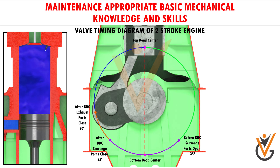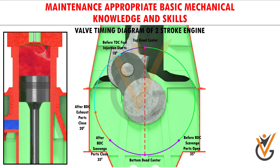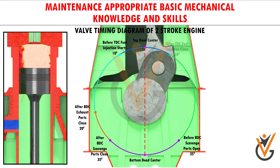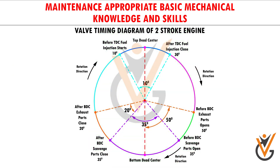Compression of air starts after the exhaust valve closes. Fuel injection starts at 10 degrees before top dead center and ends at 30 degrees after top dead center. After top dead center, expansion takes place as the piston moves down. The exhaust valve opens at 50 degrees before bottom dead center, and the cycle continues.